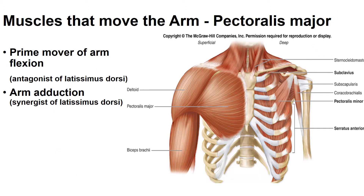The pectoralis major muscles are commonly referred to as our pecs. These are superficial muscles found on the anterior side of the thoracic cavity that are large, thick, and fan-shaped. They cover the superior part of the thorax, and the prime movement is flexion of the arm, but it also plays a role in adduction and medial rotation of the arm. With flexion, it will be an antagonist of the latissimus dorsi, but synergistic with the latissimus dorsi for arm adduction.